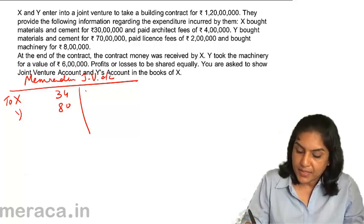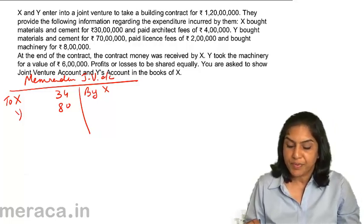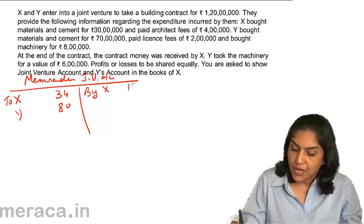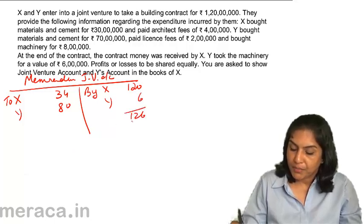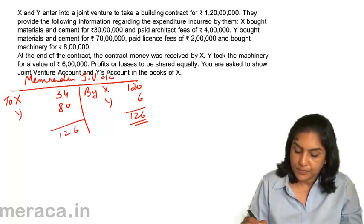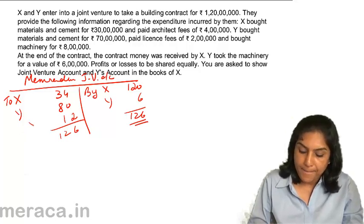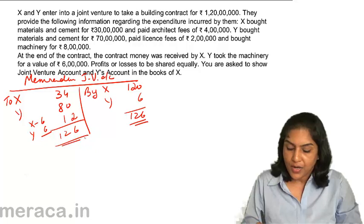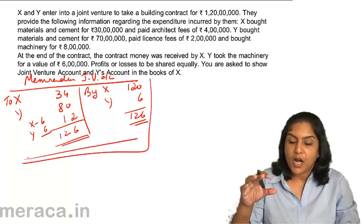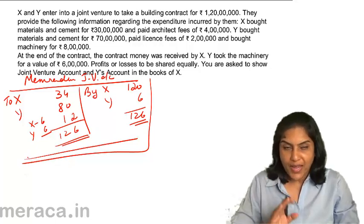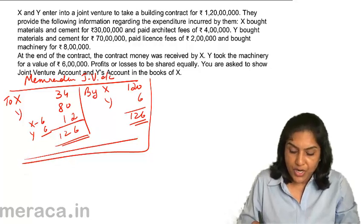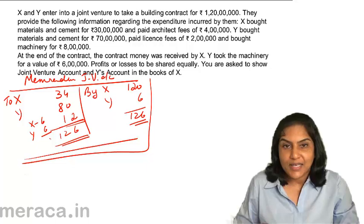On the income side, X received contract money of 120 lakhs and Y took over machinery for 6 lakhs. Looking at the profit, there is a profit of 12 lakhs — 6 lakhs and 6 lakhs each being the share of X and Y. This is how a memorandum joint venture account would be prepared. The same account would be prepared in the books of X and in the books of Y to ascertain the profit of 12 lakhs shared equally.